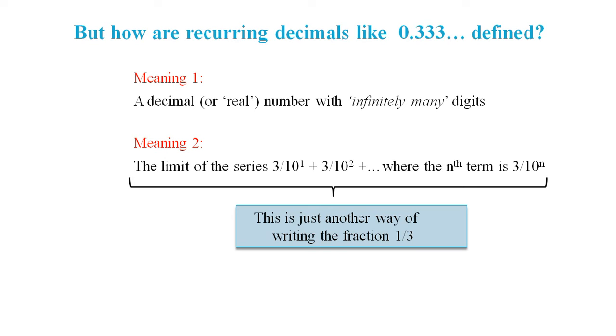It says nothing about decimal numbers. So for 0.3 recurring to be a decimal, we are left with meaning 1 to investigate.